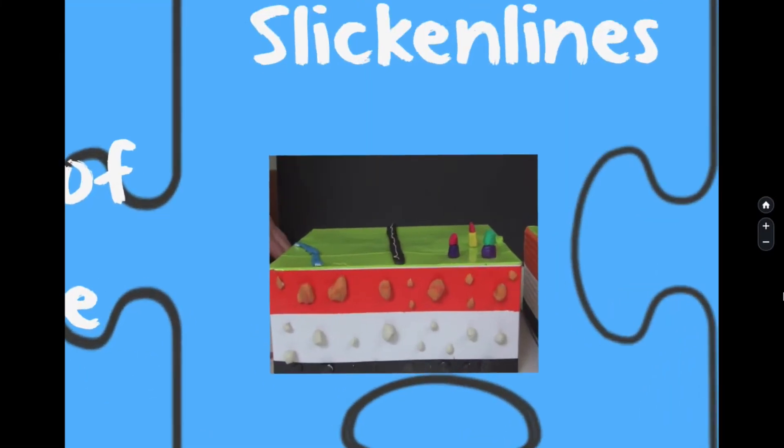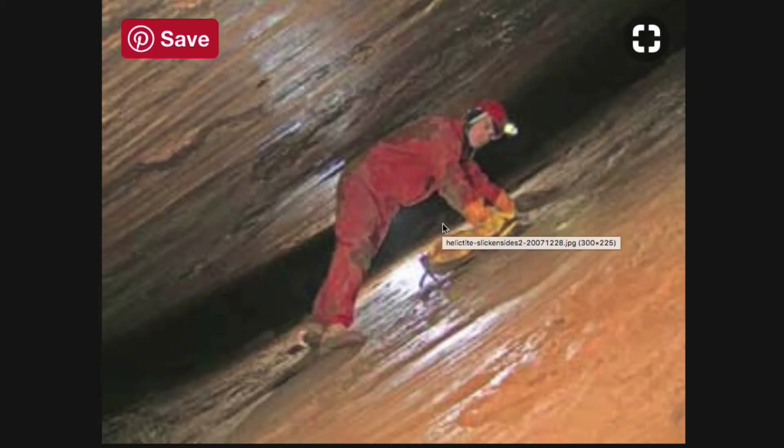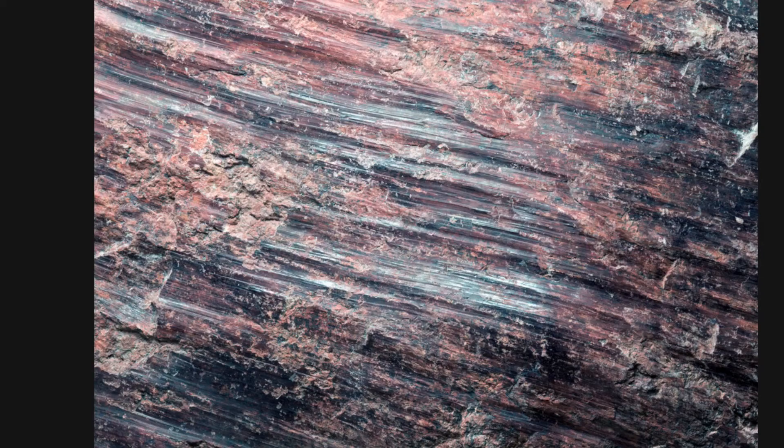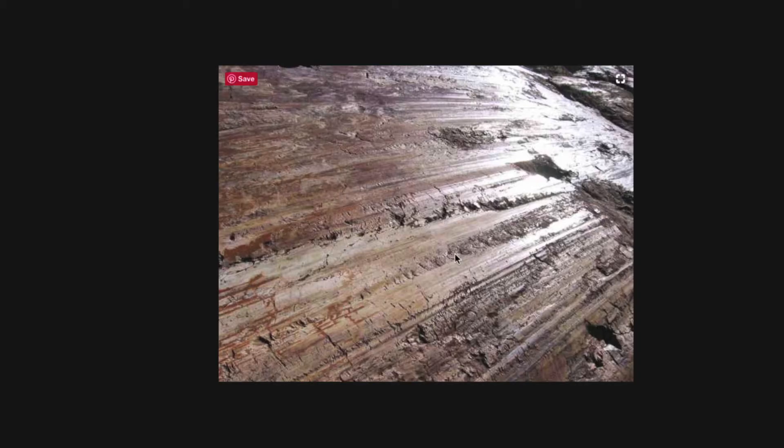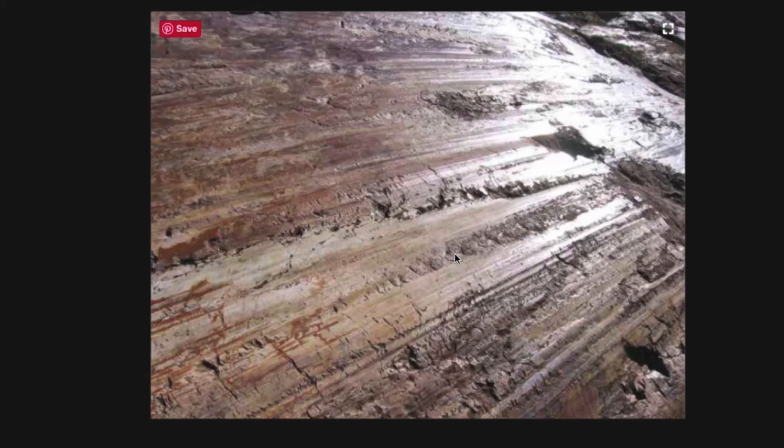Slicken sides are smooth polished surfaces of two sides of the fault. They become polished due to frictional sliding. Identifying slicken sides does not actually tell us the sense of shear, but they do indicate that we are looking at a fault surface.